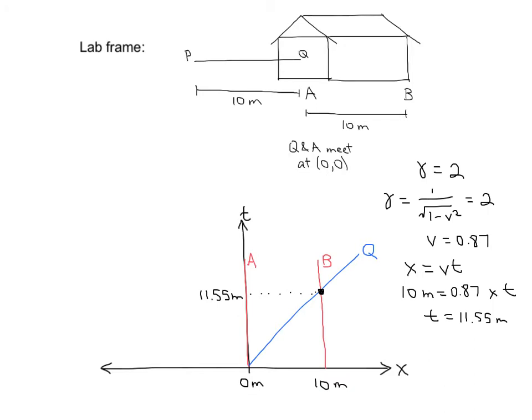And we know exactly when Q and B hit because we know that gamma equals 2, and solving for the velocity and therefore the time, we get that the time is 11.55 meters. Now let's also look at P at time 0. P is at negative 10 meters because the pole is 10 meters long. And it is moving at the same speed as Q, because both P and Q are on the pole. So its world line should be parallel to Q's world line.